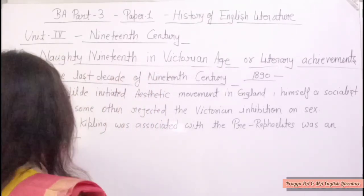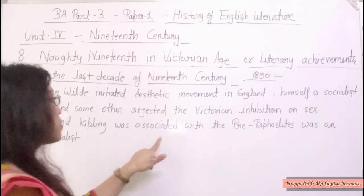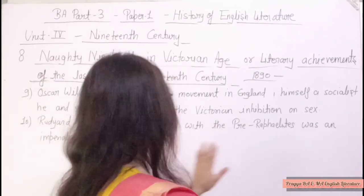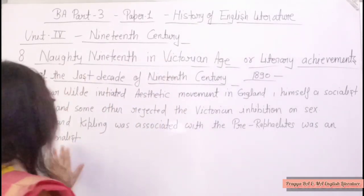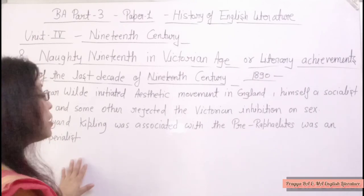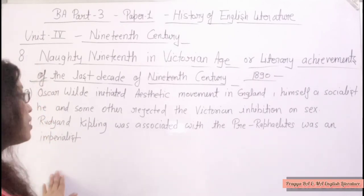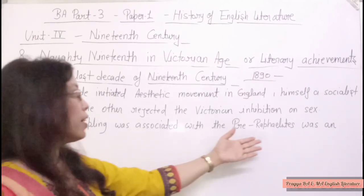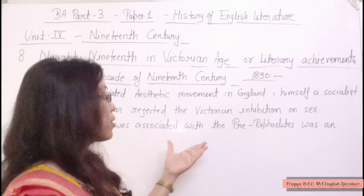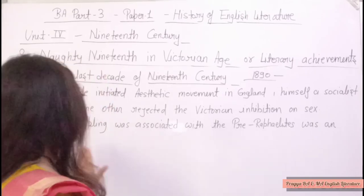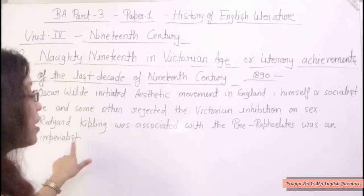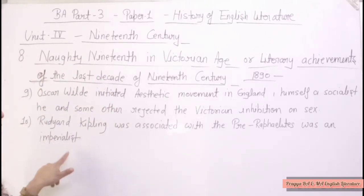Rudyard Kipling was associated with the Pre-Raphaelites and was an imperialist. He was a writer of this time period, associated with the Pre-Raphaelite movement, and was an imperialist.